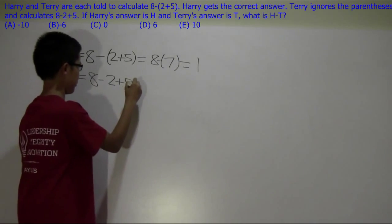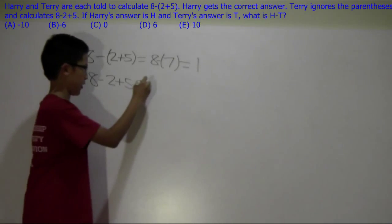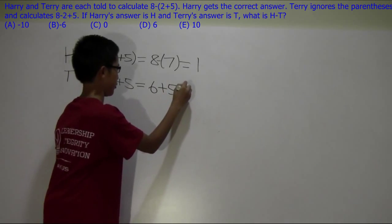And then Terry ignores them. So we go left to right to get 8 minus 2 plus 5 equals 6 plus 5 equals 11.